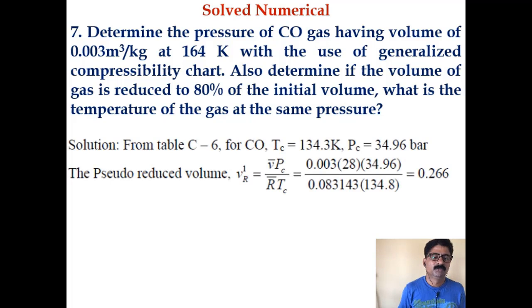Since it is to be solved using generalized compressibility chart, let us go to table C6 and note down the value of Tc and Pc for CO, carbon monoxide. Pseudo reduced volume Vr dash equals V bar Pc divided by R bar Tc, so you will get 0.266. Here R bar is always 8.3143 times 10 to the minus 3, so 0.0083143, and Tc is 134.8 from the table. Pressure is 34.96 bar, and V bar is 0.003 times 28 because V is given as 0.003.